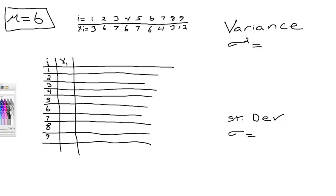We still have our location i, 1, 2, 3, 4, 5, 6, 7, 8, 9. And we have our number x sub i, which is 3, 6, 7, 6, 7, 6, 4, 3, 12. So what we've done so far is take this horizontal number string and make it vertical.